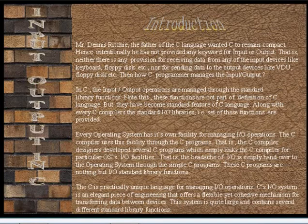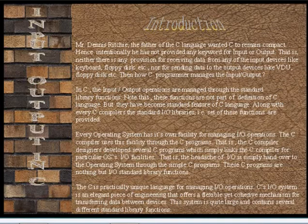Note that every operating system has its own facility for managing I/O operations. The C compiler uses this facility through C programs. That is, the compiler designers develop several C programs which simply link the C compiler to a particular operating system's input-output facilities. The headache of I/O is simply handed over to the operating system through simple C programs, which are nothing but input-output standard library functions.